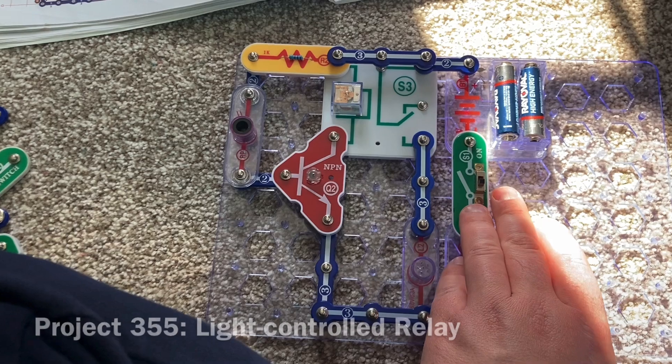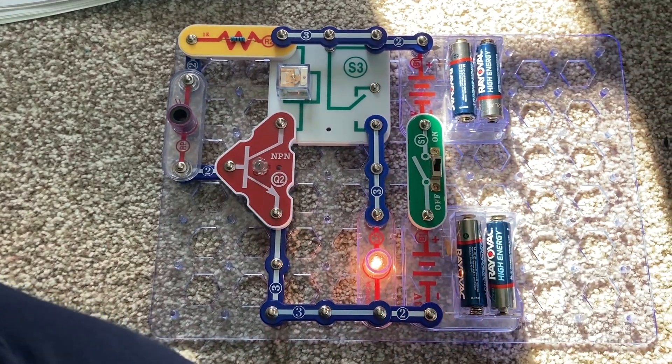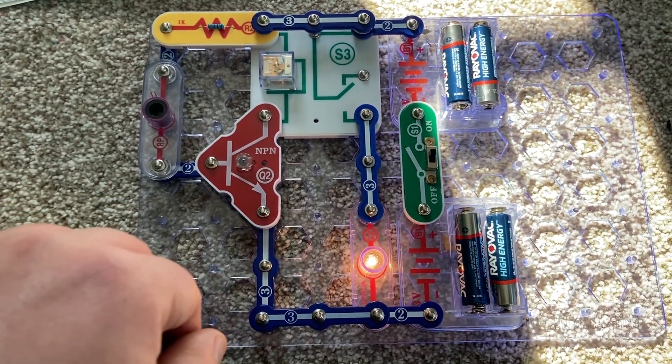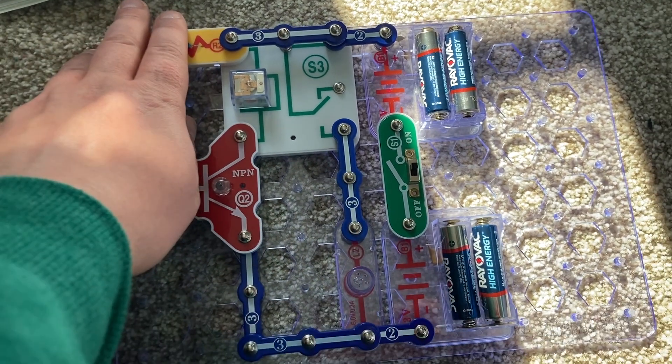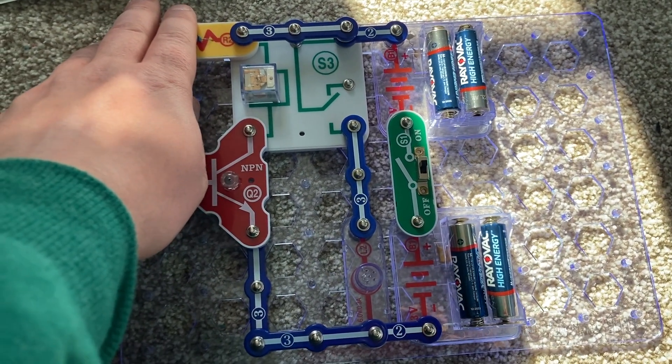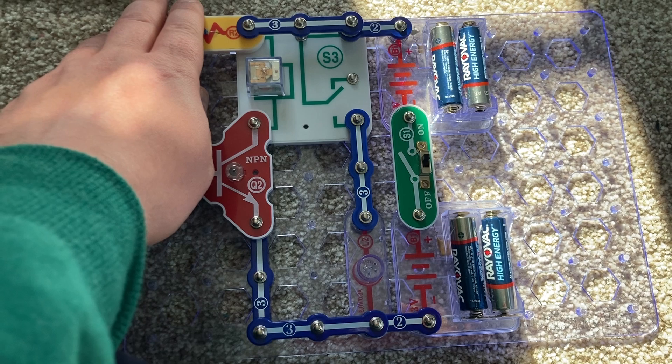When there is light on the photoresistor, the relay turns the lamp on. But when I cover the photoresistor and light can't reach it anymore, the relay turns the lamp off.